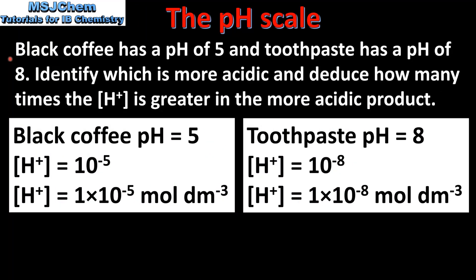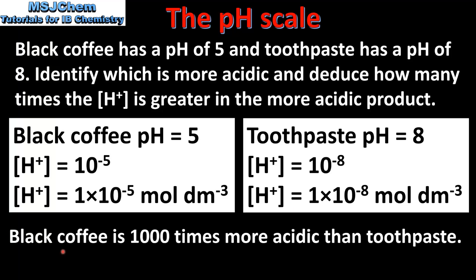Let's end by looking at an example. Black coffee has a pH of 5 and toothpaste has a pH of 8. Identify which is more acidic and deduce how many times the hydrogen ion concentration is greater in the more acidic product. For black coffee with a pH of 5, the hydrogen ion concentration is equal to 10 to the negative pH value, giving 1 × 10⁻⁵ mol dm⁻³. Toothpaste has a pH of 8, which corresponds to a hydrogen ion concentration of 1 × 10⁻⁸ mol dm⁻³. By comparing these values we can see that black coffee is 1000 times more acidic than toothpaste.